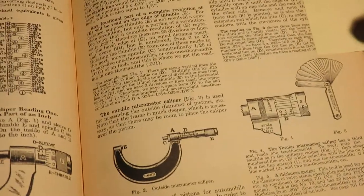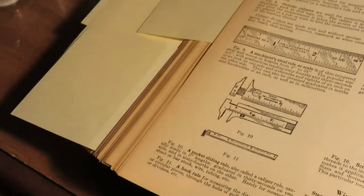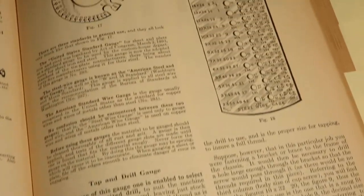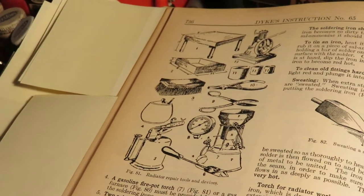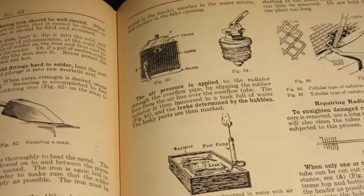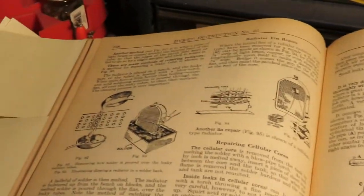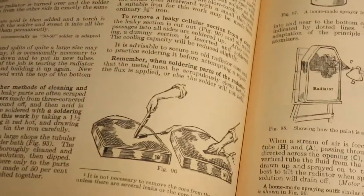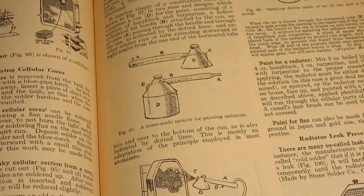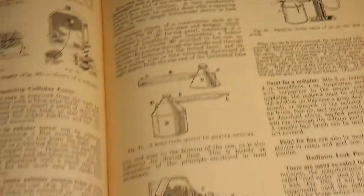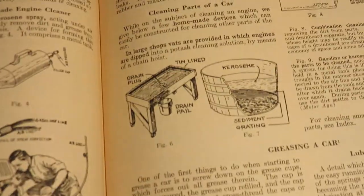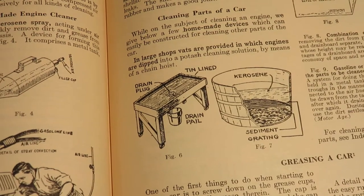Calipers, micrometers, micrometers, fuel gauge. All look the same today. This section's about radiator repair and pressure testing. How's this work? Cleaning car parts, use kerosene.